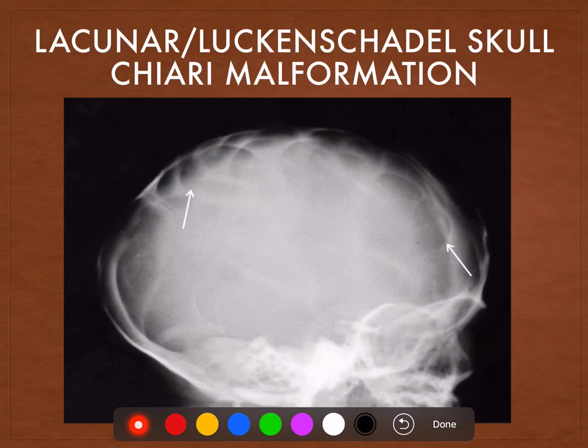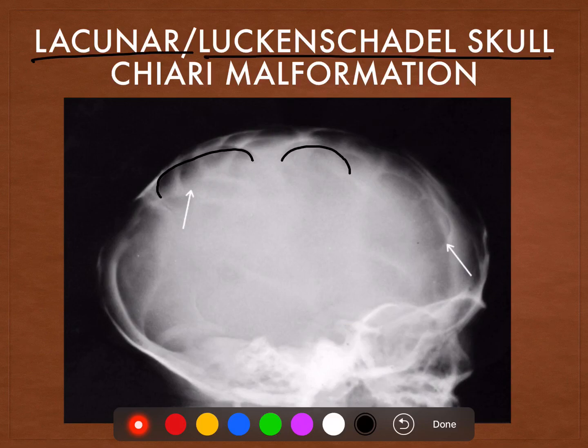Here we see well-defined radiolucent defects in the skull of a young child and this is known as the lacunar skull, or the lückenschädel skull, and this is characteristic of Chiari malformation. The bone is actually dysplastic, and this dysplastic bone of the skull is seen as multiple large radiolucencies in the skull.